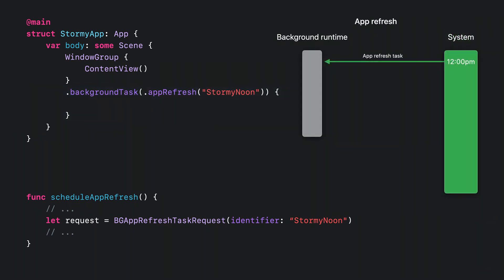When the app receives a background task, any blocks registered with this modifier that match the background task received are run. In this case, we used the app refresh task type, which can be scheduled in advance to provide our application with a limited amount of runtime in the background at a desired date. Using the same identifier for the request and the handler in the background task modifier lets the system identify which handler to call when the corresponding task is received by your application.